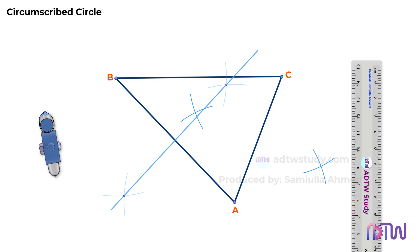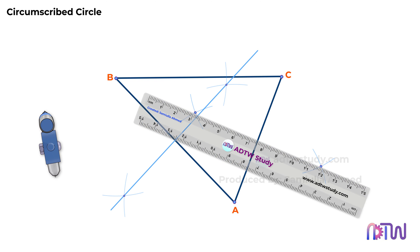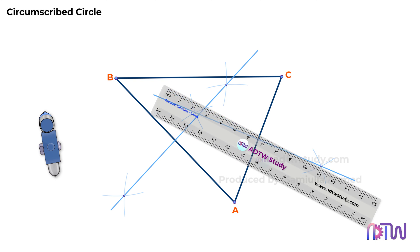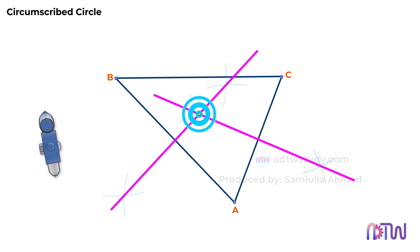After this, draw a line passing through the intersections of these arcs. The intersection of these two lines will be the required center point for the circle.